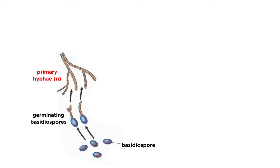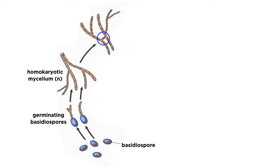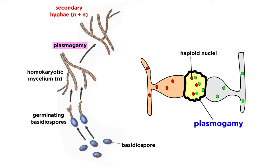As more and more clones of the original basidiospore nucleus are created and spread throughout the hyphal network, the resulting structure is known as a homokaryotic mycelium. Generally, this homokaryotic mycelium will not produce another basidiocarp unless it fuses with another genetically compatible mycelium.